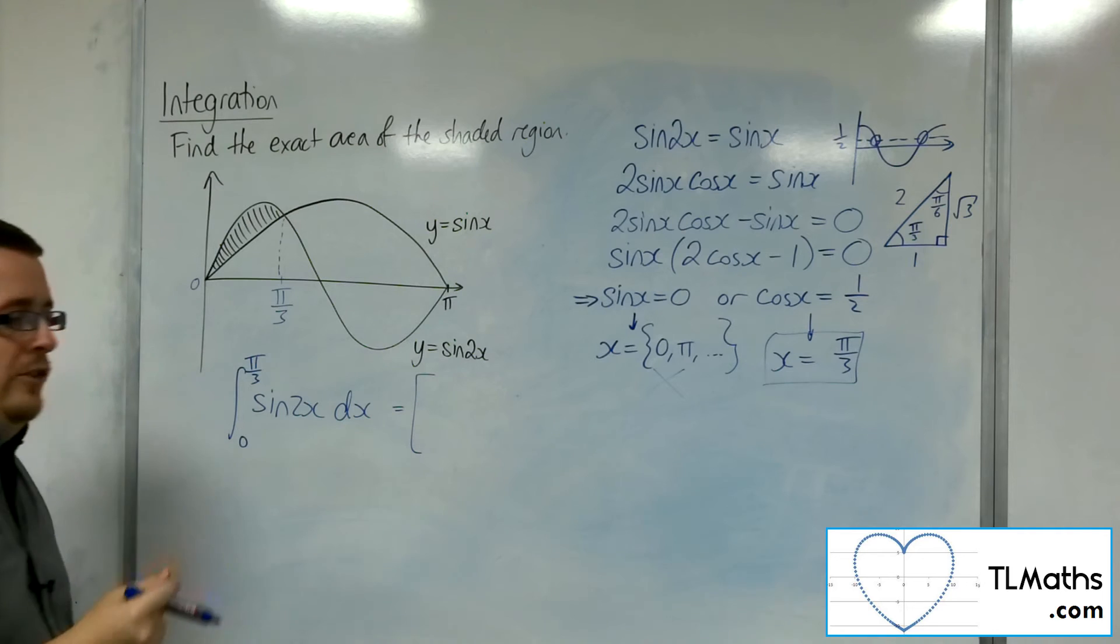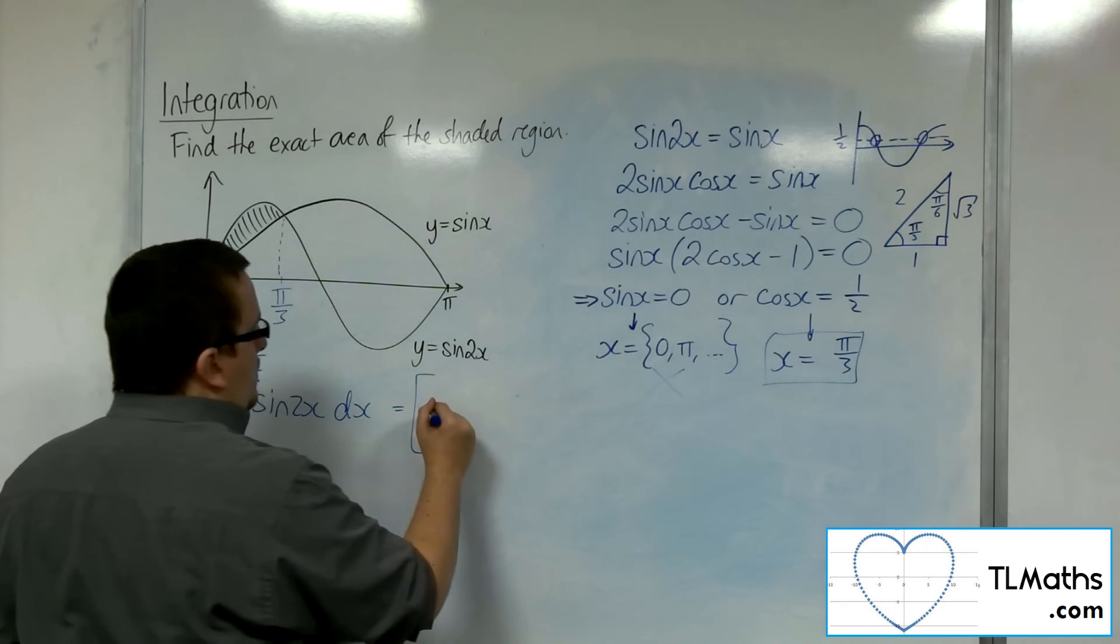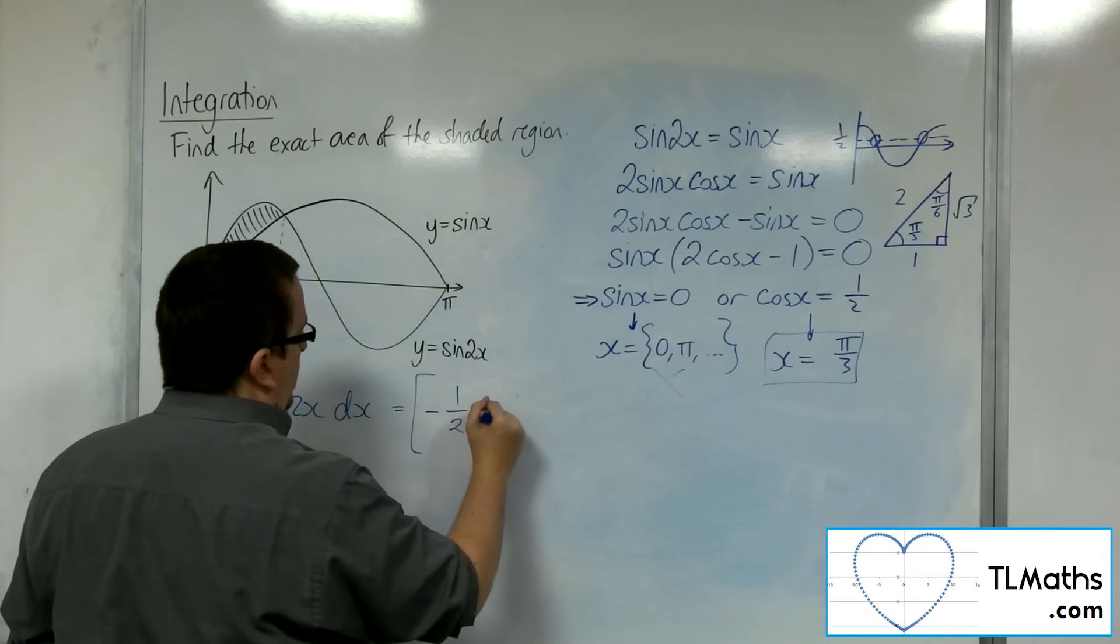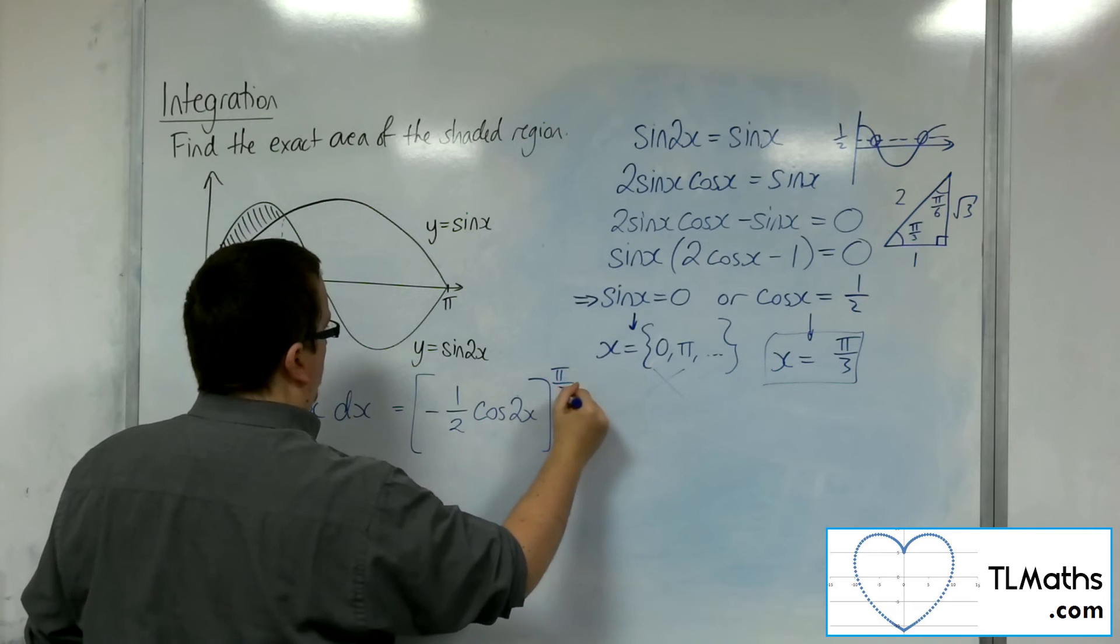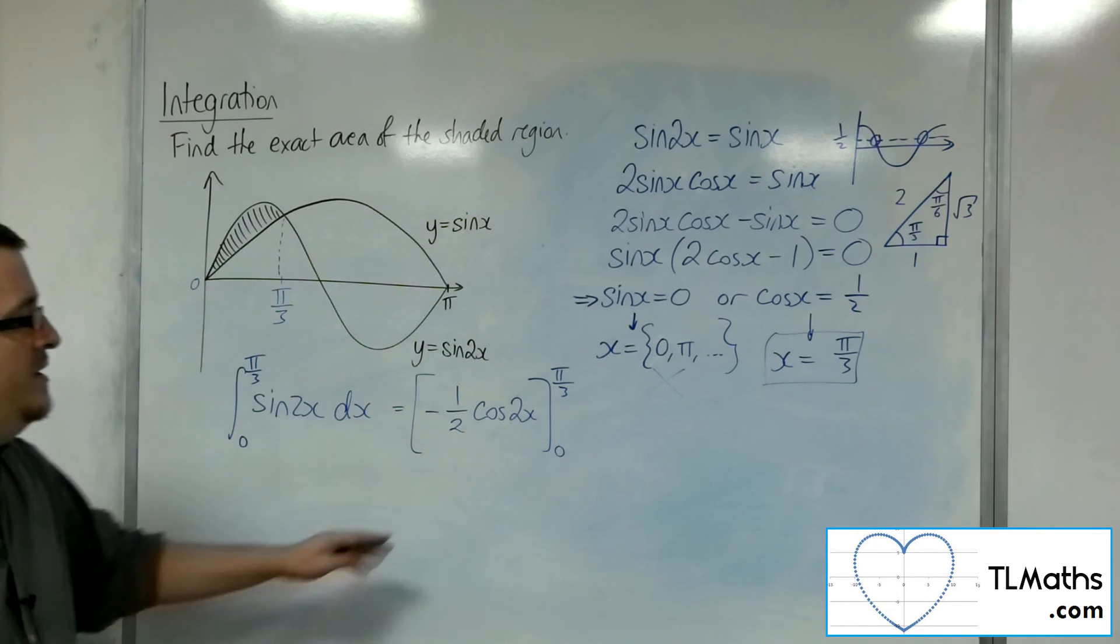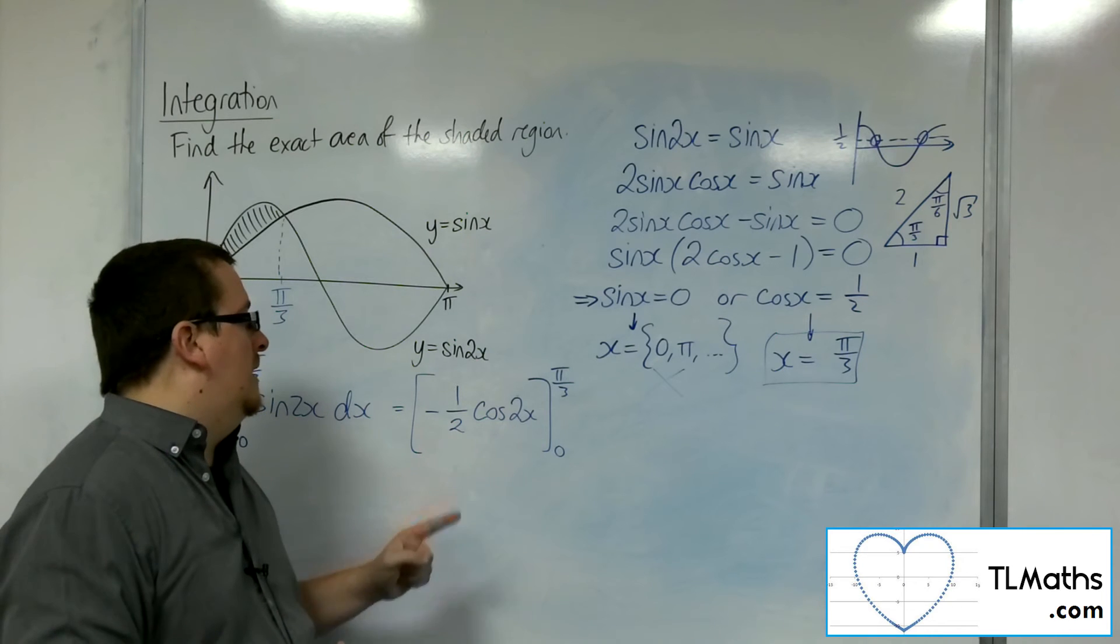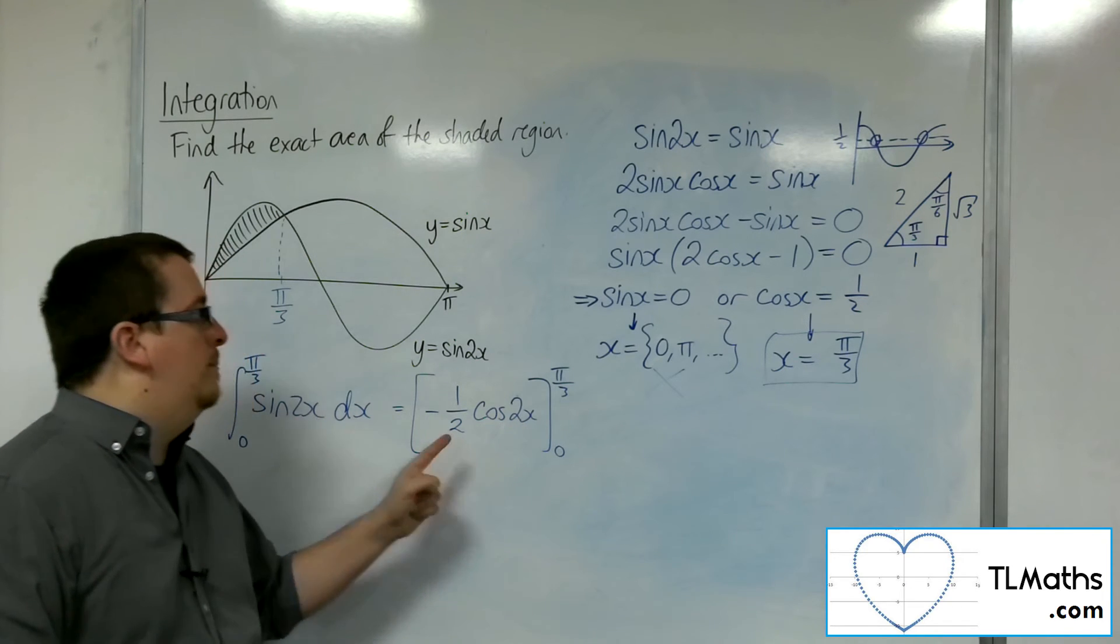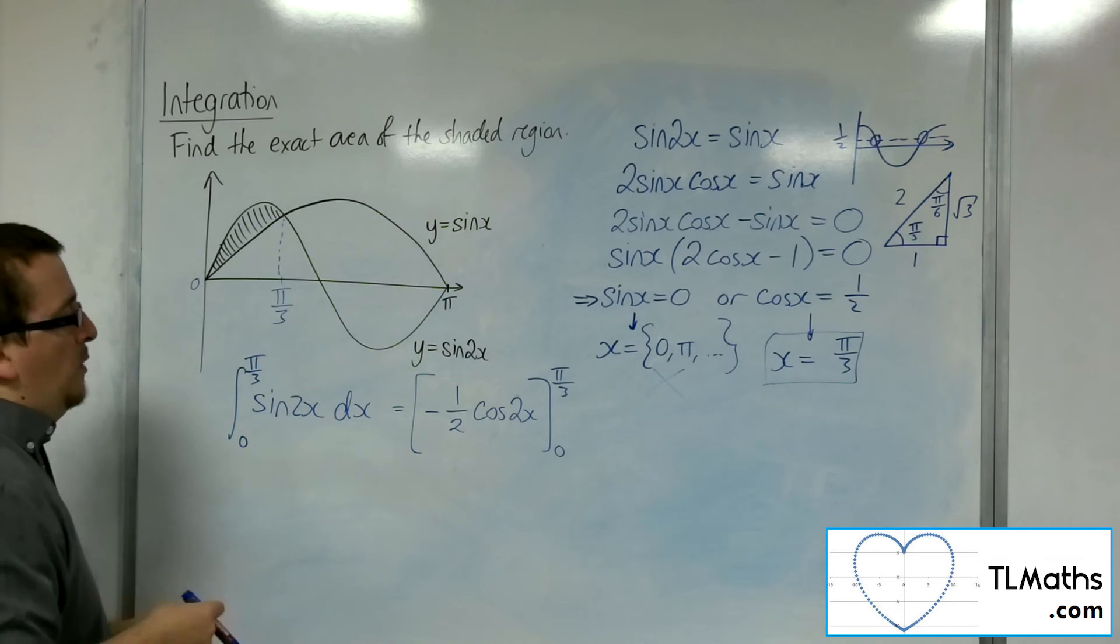OK. So sine 2x, what does that integrate to? Well, that would be minus 1 half cosine of 2x. Because I know that in differentiating that, cosine goes to minus sine. Once you knock out the minus, the 2 will come out and multiply with the half to make 1, which leaves me with precisely what I want.